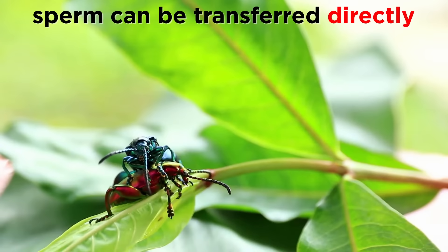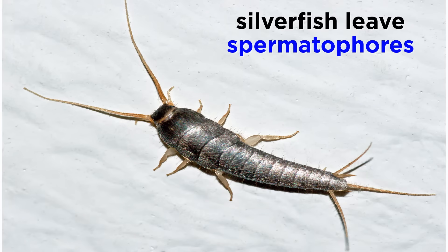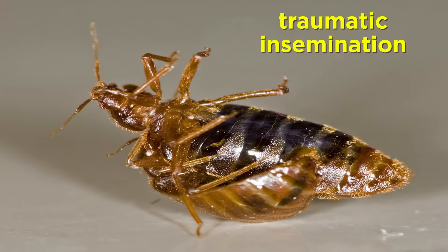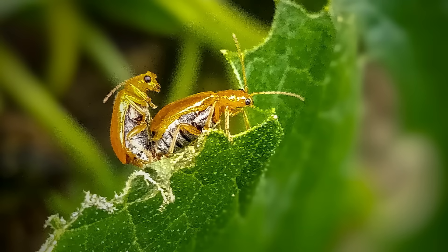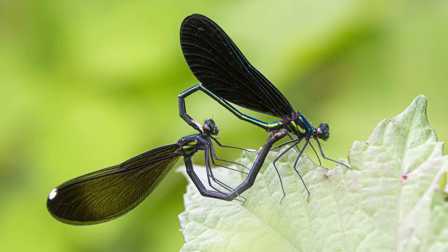Sperm is often transferred directly from the male penis into the female vagina during copulation, but in some species like the silverfish, the male leaves packets of spermatophores, and in still other species like bedbugs, the male pierces the female's body with his hypodermal penis and releases sperm into her body cavity. Most insects mate only once in their lifetime, though some, like the damselflies, mate many times a day, and the female will often store male sperm within her seminal receptacle.